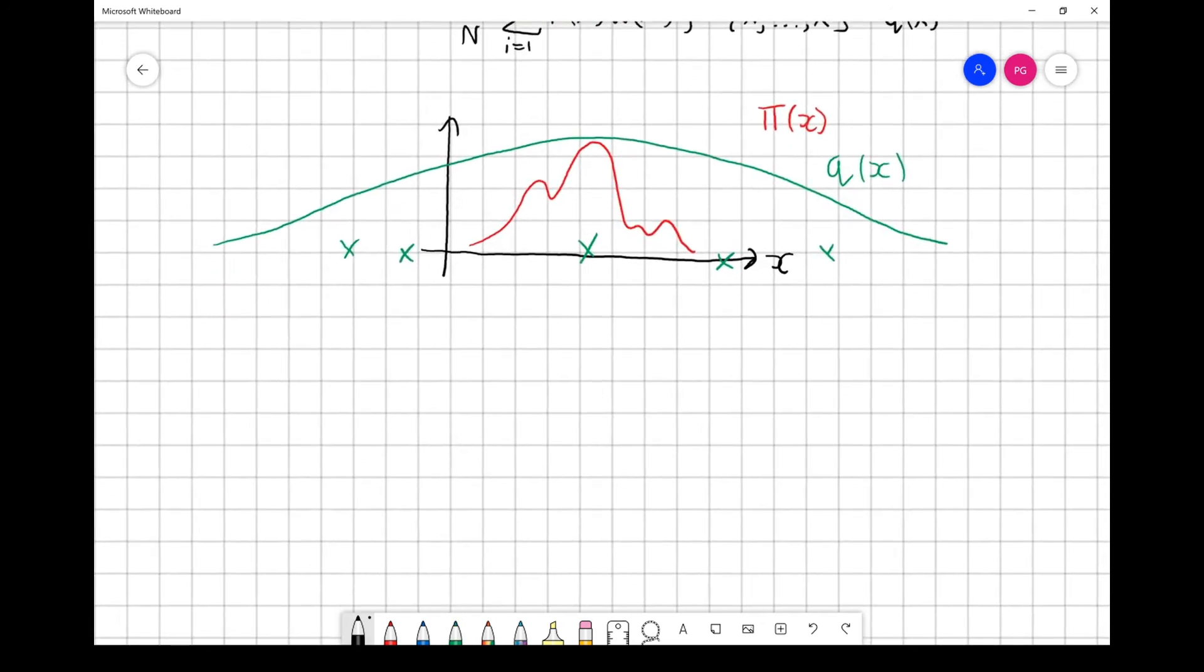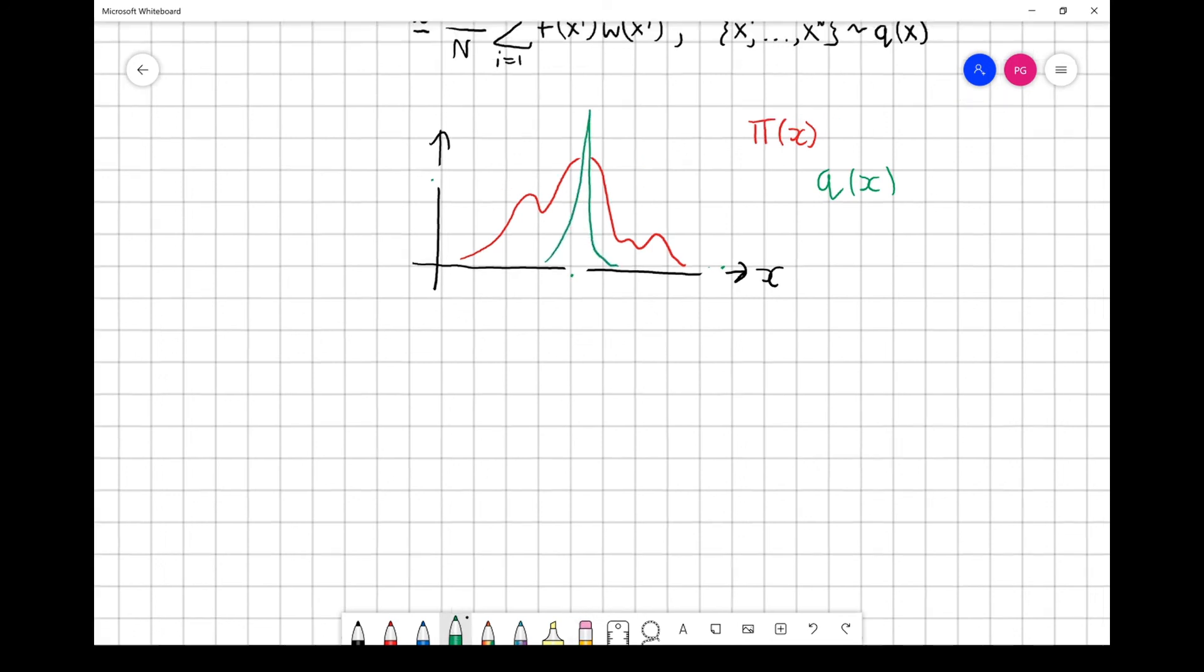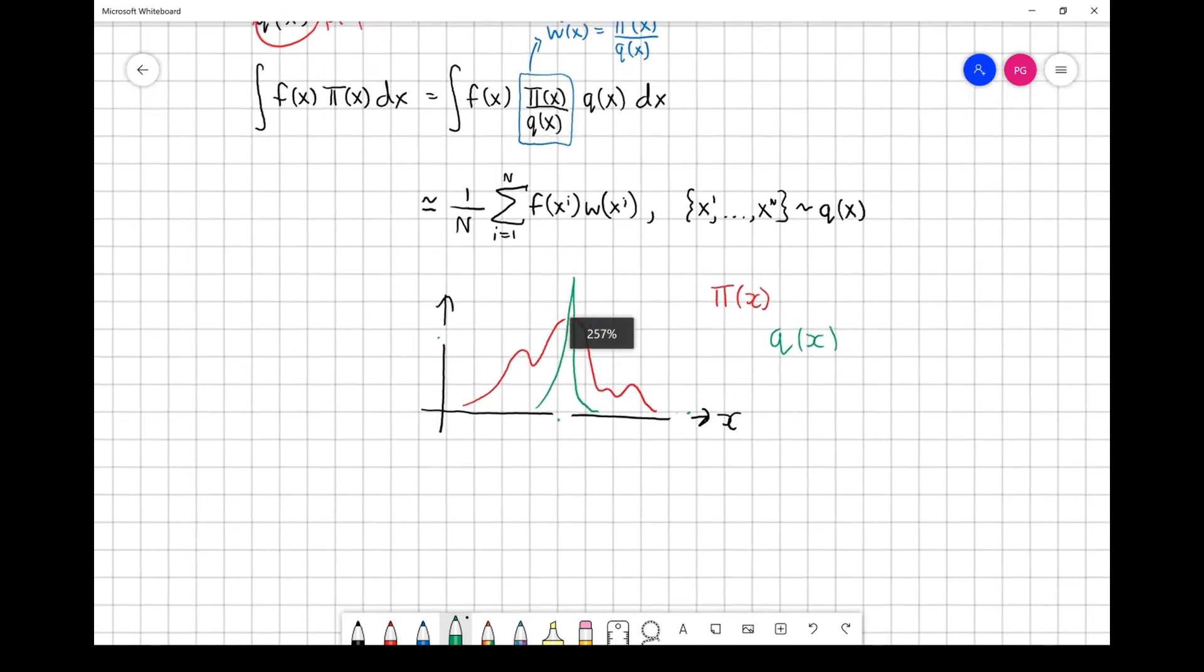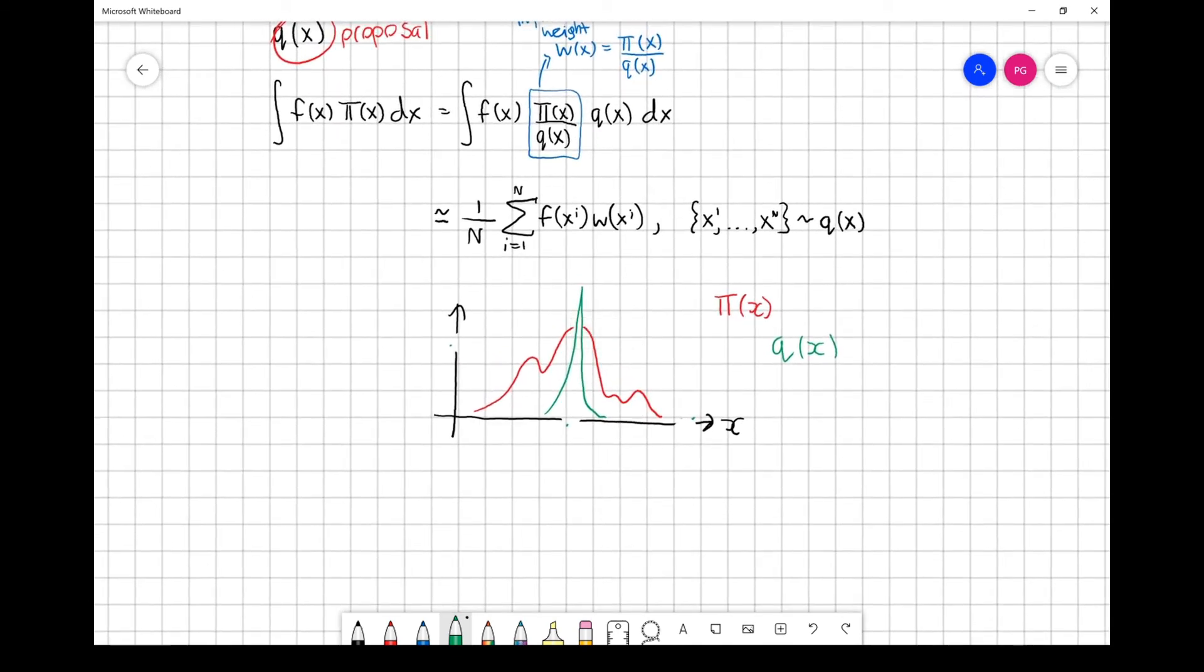Likewise, you can also make the other mistake and have a proposal that's really narrow. If you have a proposal that's too narrow, its support is too narrow, then in this case it'd be at least very improbable that you can get samples across all of the important regions of the target distribution. So intuitively, it should be obvious that the choice of proposal is going to have a dramatic effect on the efficiency of your algorithm, i.e., the number of samples that you need to realize an accurate approximation of this integral using this Monte Carlo approach.